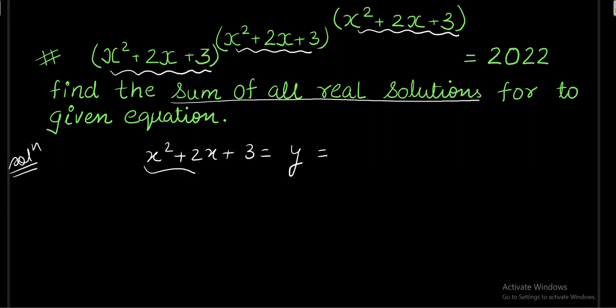That is why rewriting x squared plus 2x plus 3 as x plus 1 whole square plus 2 clearly gives the range of y as y greater than or equal to 2. I'm marking it as the first equation. I have the information about y that it is always greater than or equal to 2.